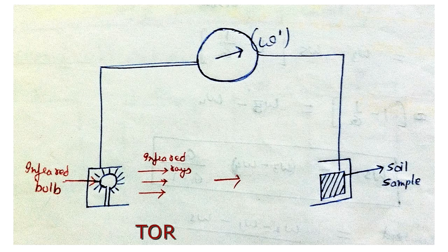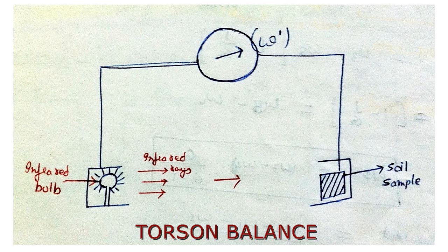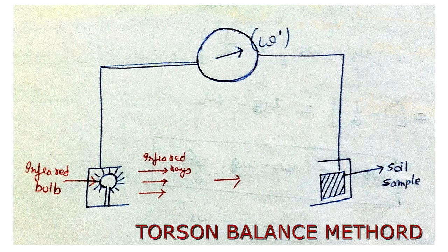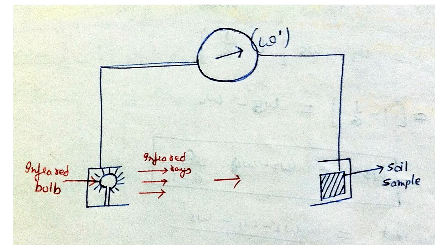The torsion balance method involves placing the soil on one side of a balance and heating it with infrared from the other side. Because some soils are highly hygroscopic, this method allows instant weight measurement during drying — making the torsion balance method suitable for such soils.